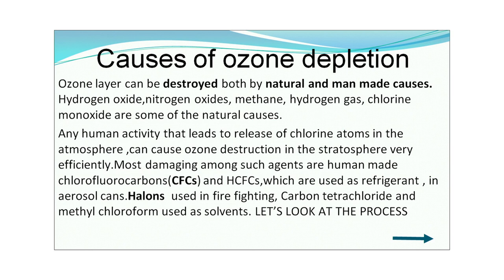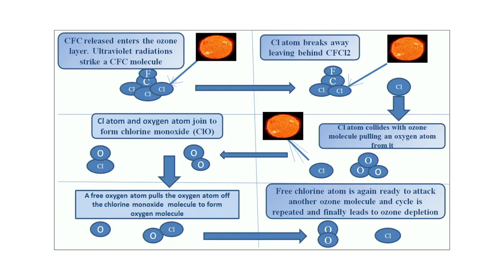Halons used in firefighting, and carbon tetrachloride and methyl chloroform used as solvents also add to ozone depletion. The process: UV radiation released from the sun reaches our atmosphere. CFC released into the atmosphere enters the ozone layer. UV radiation strikes the CFC molecule and breaks away chlorine from the CFC molecule, leaving a free chlorine atom.